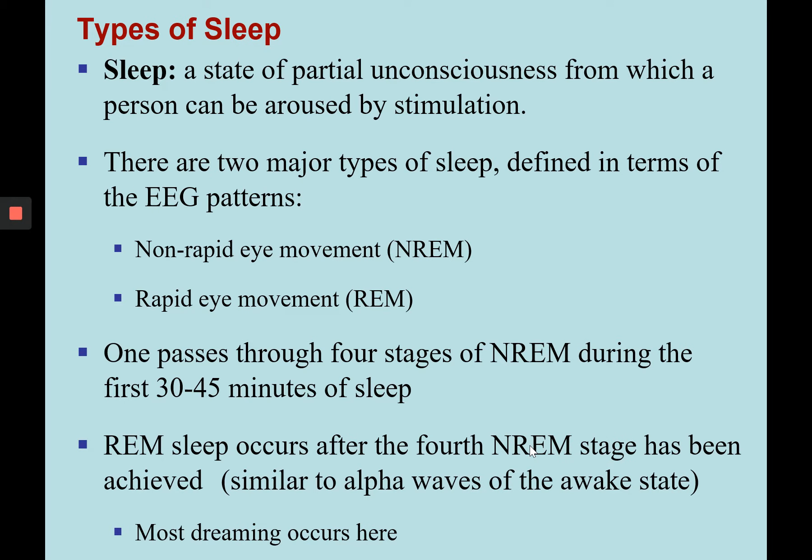Next, we're going to look at sleep. Sleep is a temporary period of partial unconsciousness, usually at night, and a person can be aroused by stimulation during sleep. There are two major types of sleep defined by EEG patterns: non-REM and REM sleep. Non-REM is non-rapid eye movement; REM is rapid eye movement. One passes through four stages of non-REM during the first 30 to 45 minutes of sleep.